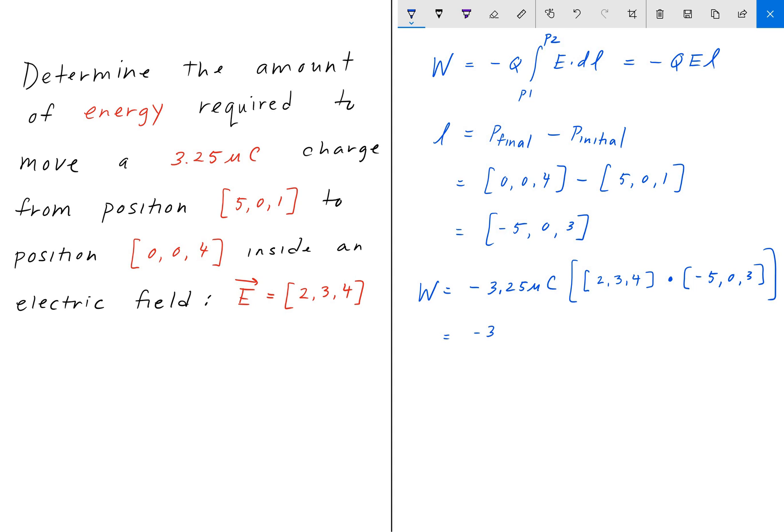Alright, so that's 3.25 microcoulombs, and then we can do the dot product here. 2 times negative 5 is negative 10, plus 3 times 0 is 0, plus 4 times 3 is 12. And then that gives us negative 3.25 microcoulombs, multiplied by 2. So, this ends up equaling negative 6.5 times 10 to the negative 6 joules.